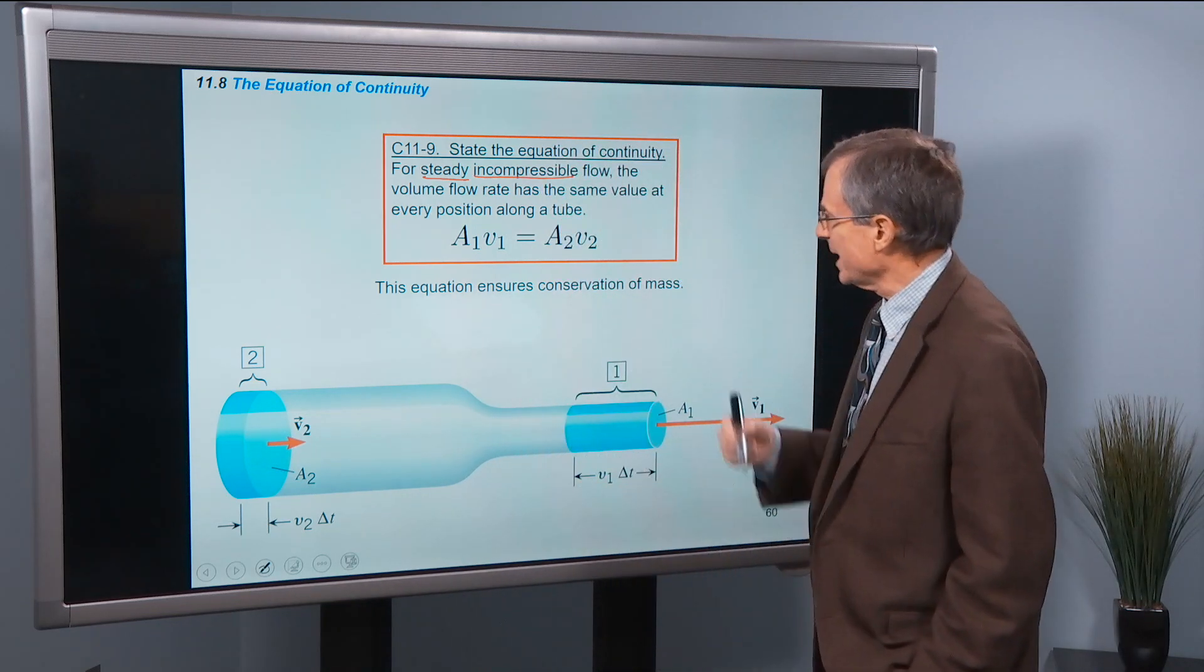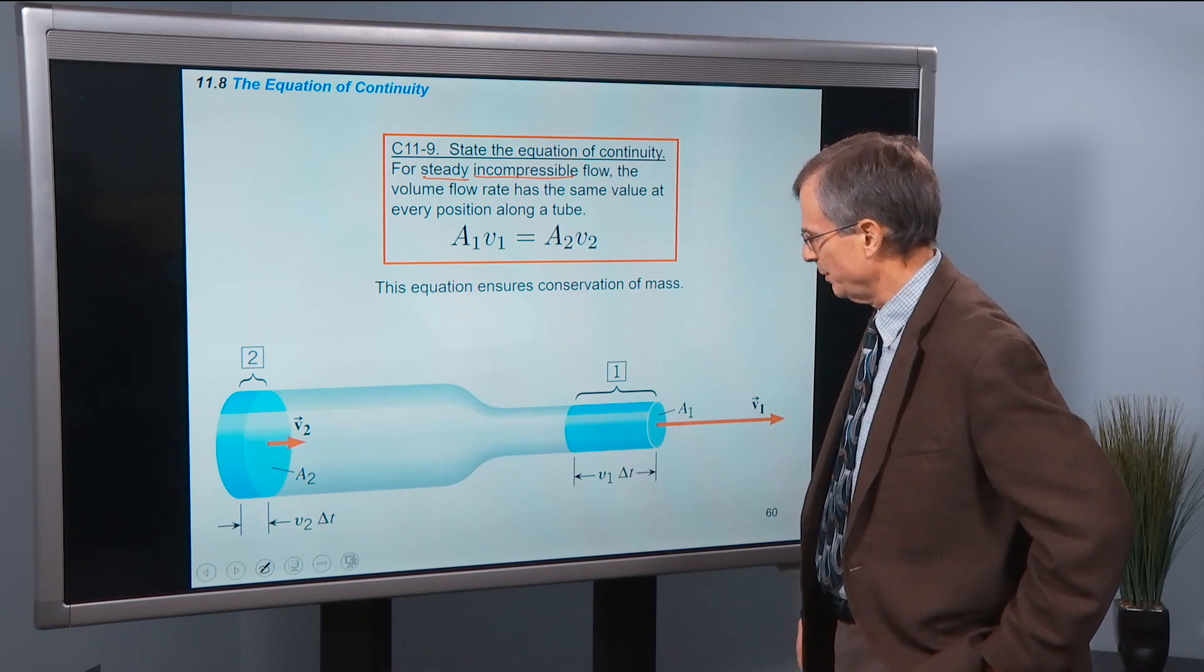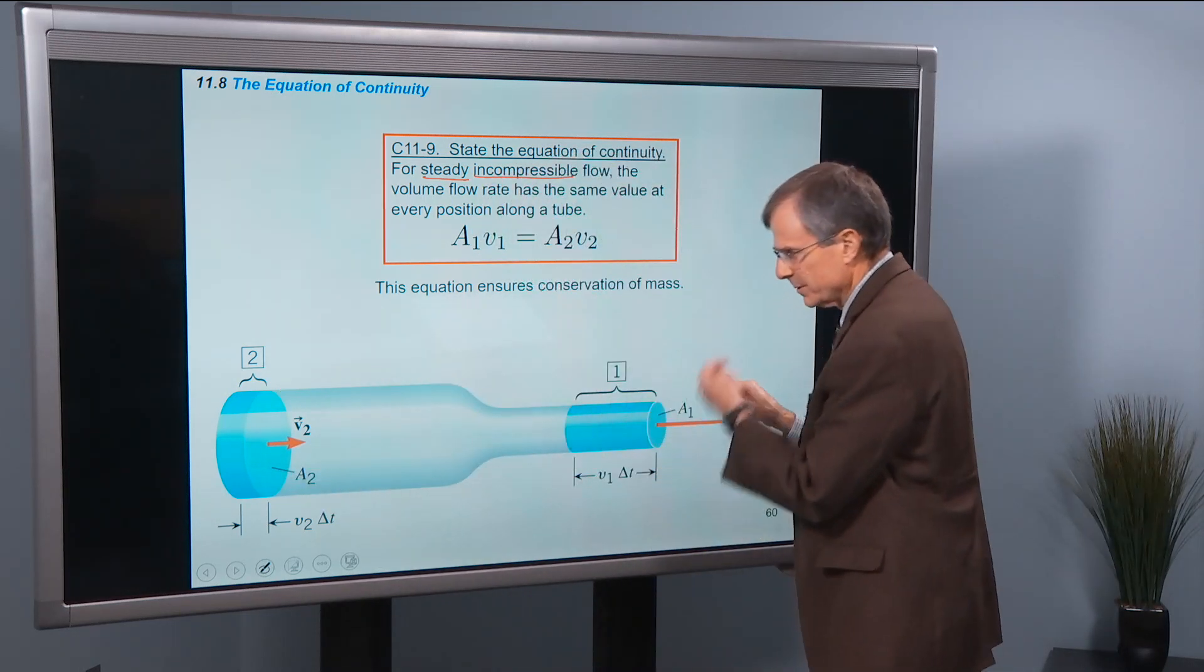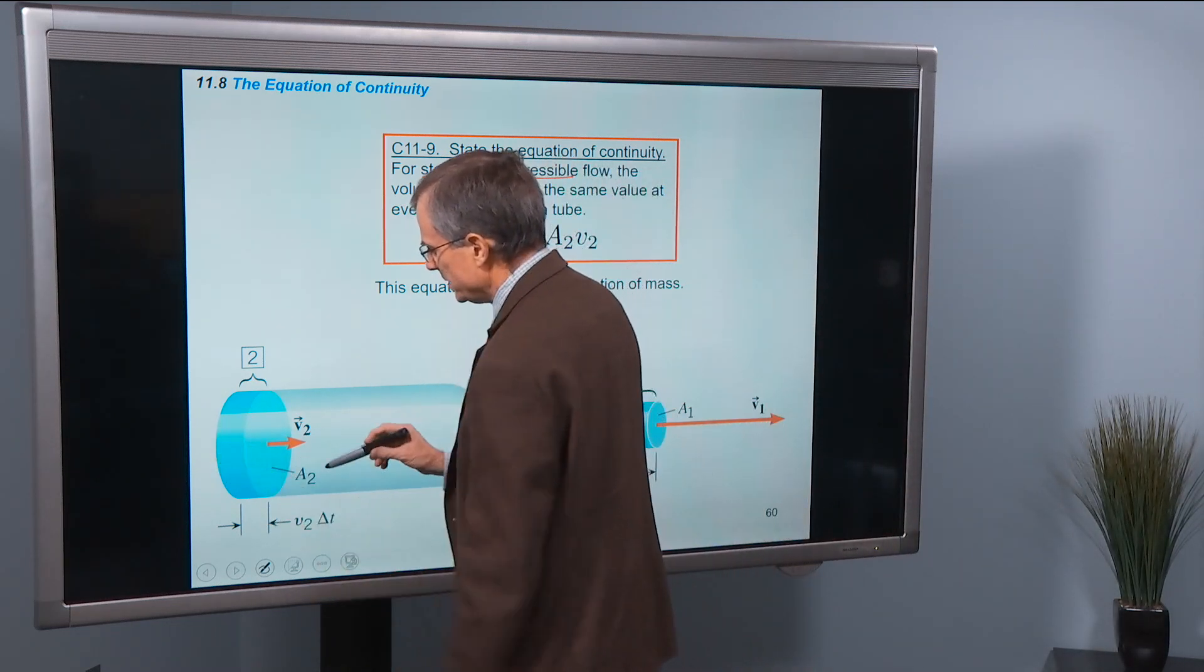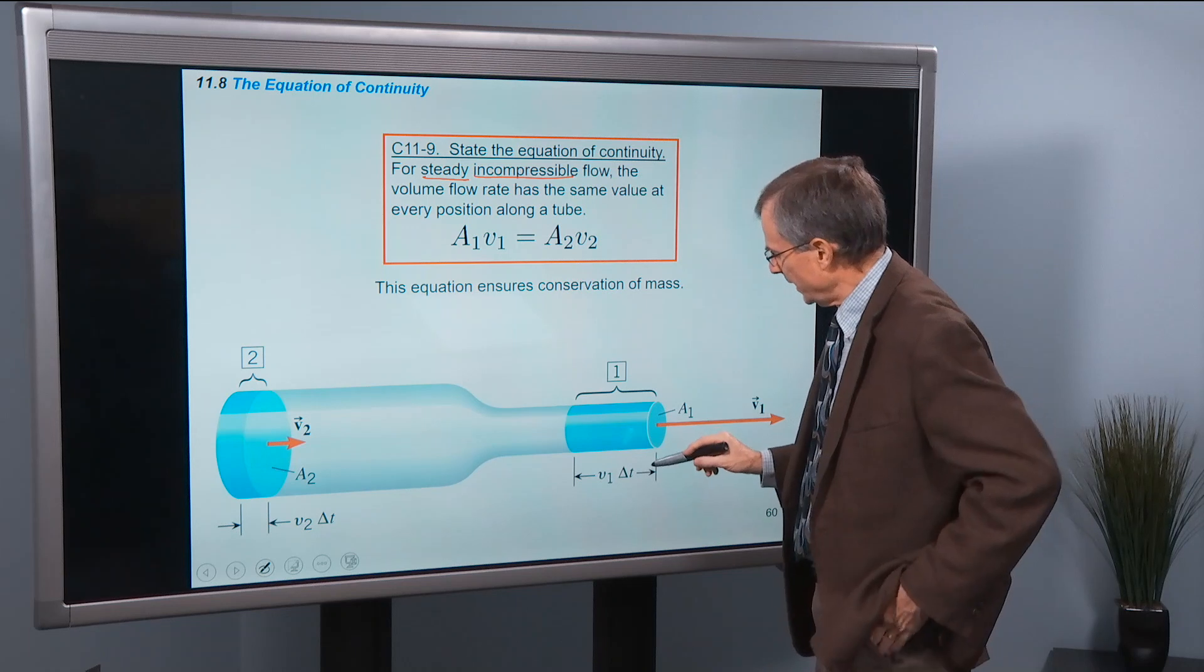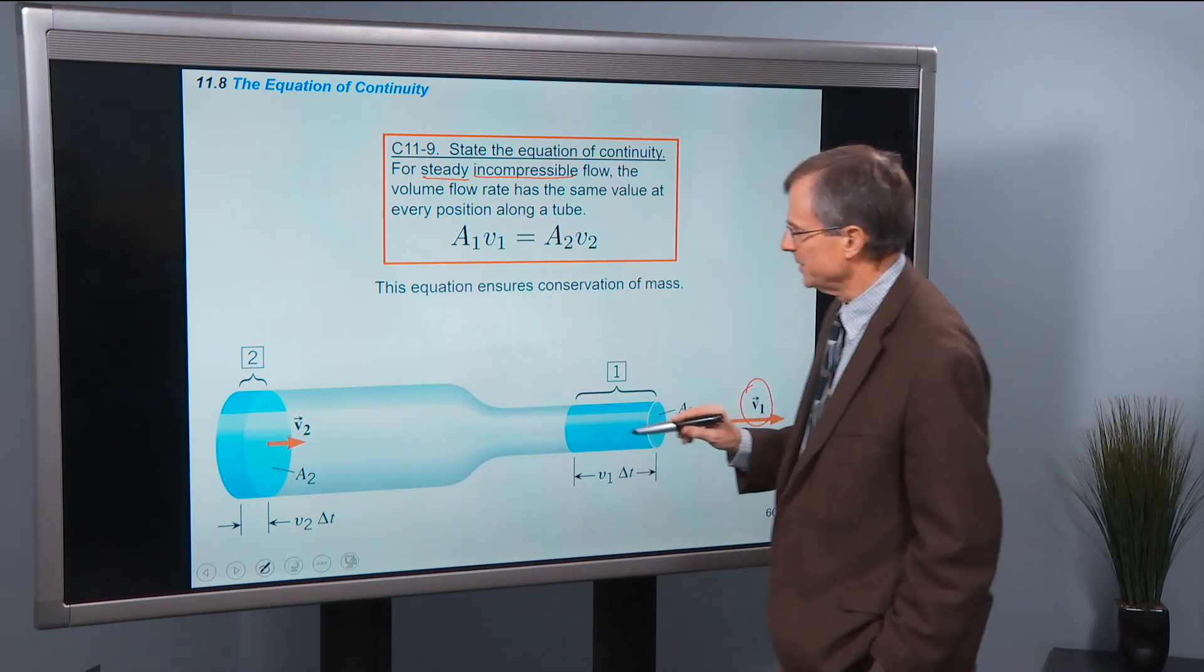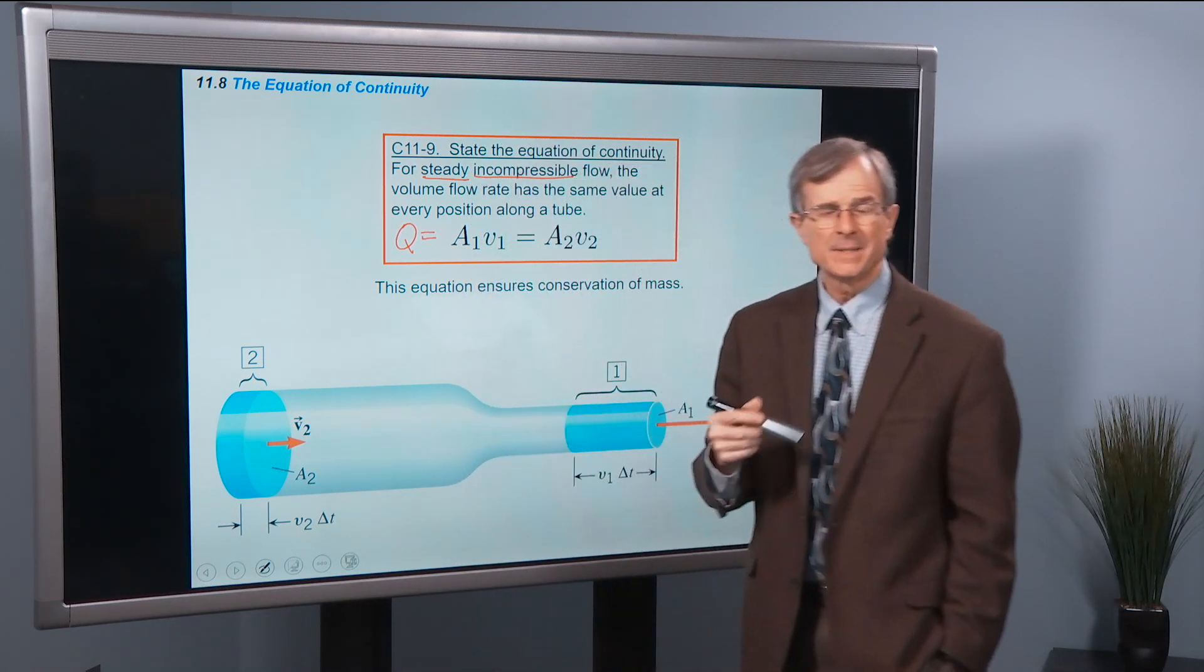So for those caveats, the volume flow rate has the same value at every position along a tube. So we're going to do a demonstration in just a second here. But if a tube narrows down, so this looks like a coke bottle, and the velocity is a particular velocity here with a cross-sectional area there. And you move to an area that is smaller, a cross-sectional area, then the velocity has to be higher, in such a way that the volume flow rate Q is maintained to be a constant.